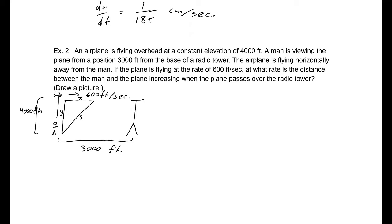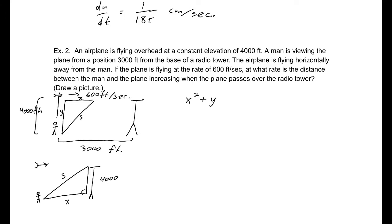Taking the derivative of both sides gives us 2X dx/dt equals 2S dS/dt, because the derivative of any constant is zero. The information I know: the plane is moving at 600 feet per second, so dx/dt is 600. The X value when it passes over the radio tower is 3,000 feet. Using the Pythagorean theorem with 3,000 and 4,000, S is going to be 5,000.